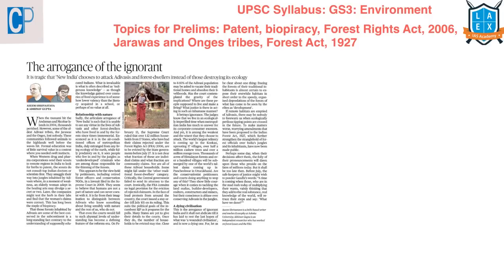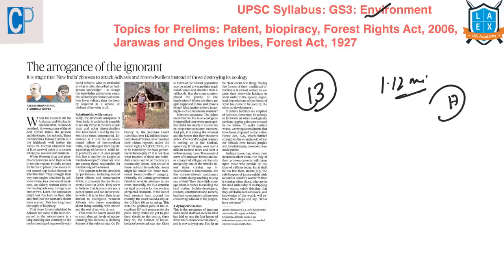Our first article is 'The Arrogance of the Ignorant.' This article comes under GS Paper 3 under the topic of environment. The context of this article is that on February 13th, the Supreme Court has ruled that nearly 1.12 million households from 17 states have to be evicted by the state governments before July 27th.